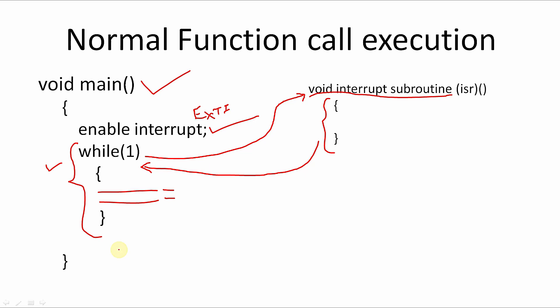This is the normal functionality of an interrupt function call, whatever the interrupt type — external interrupt, UART interrupt, ADC interrupt, SPI interrupt, I2C interrupt. The functionality is the same; only the way of triggering varies. EXTI is triggered via a GPIO pin by providing a particular signal, while an ADC interrupt is triggered when an analog-to-digital conversion is complete. The kind of triggering varies, but the function of calling the ISR and returning to the main function is common. This is how interrupts are useful for interrupting the program in a priority manner to execute a certain part of code.